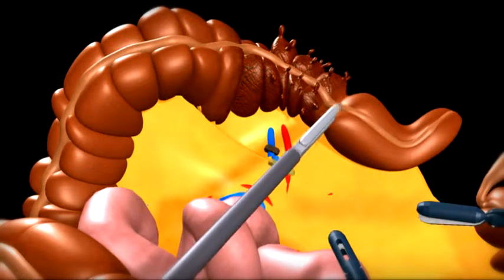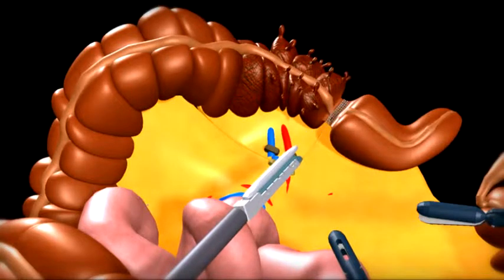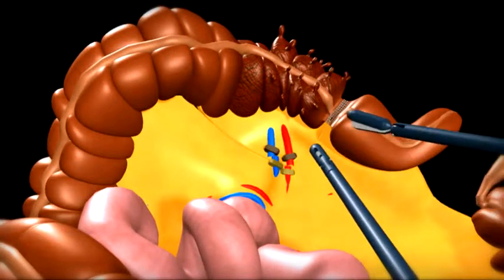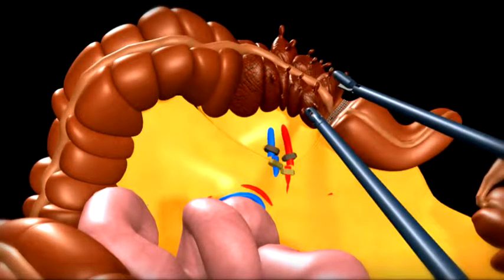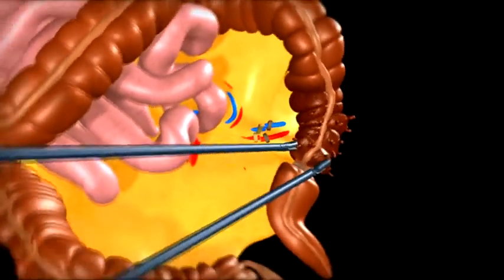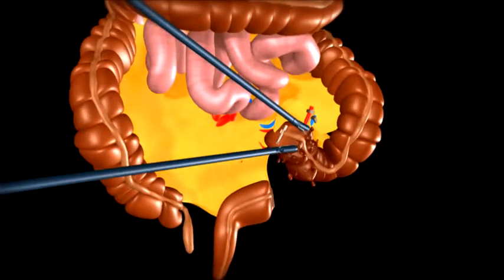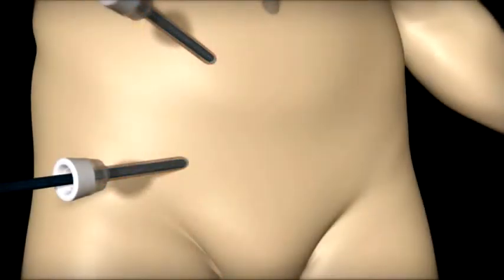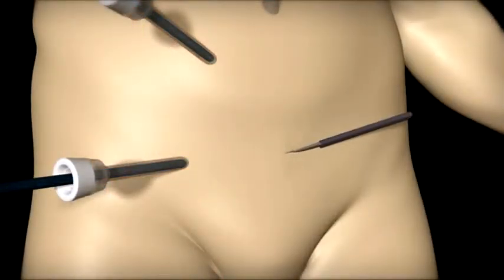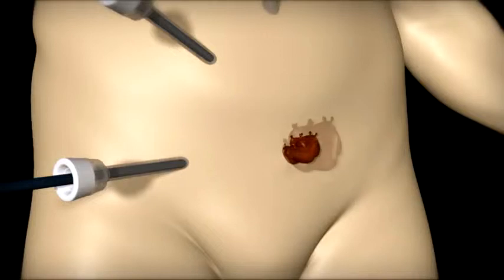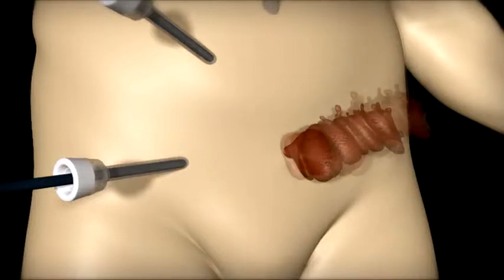The lower end of the colon is divided at the rectum. A small two-inch incision is made in the lower abdomen and the diseased portion of the colon is brought up and removed.